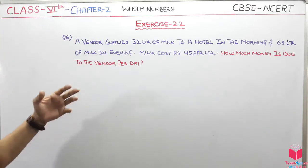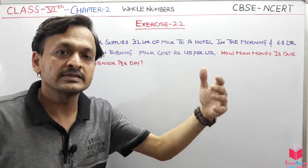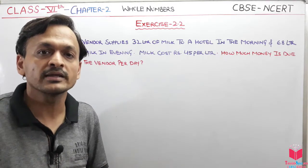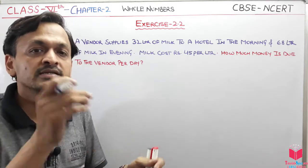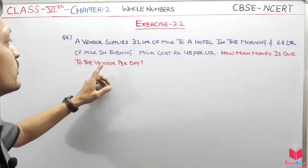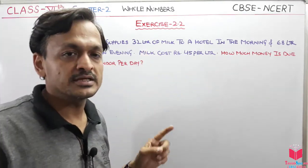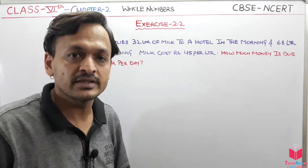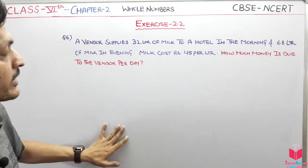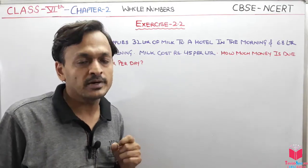We have a vendor supplier — like the newspaper vendor — who is going to go and supply. This vendor is supplying 32 liters of milk to a hotel in the morning, then 68 liters of milk in the evening. The milk cost is 45 rupees per liter.